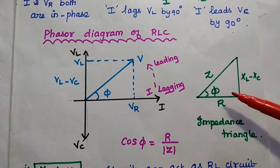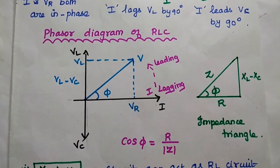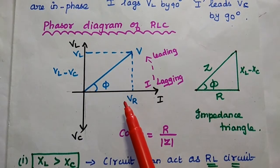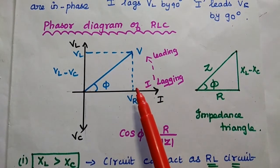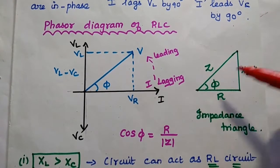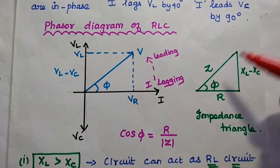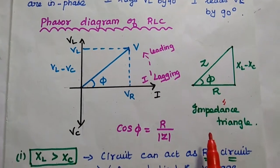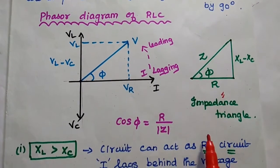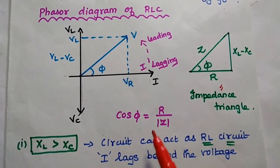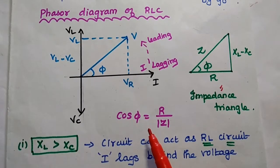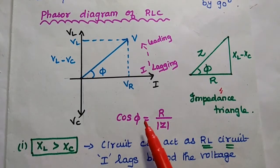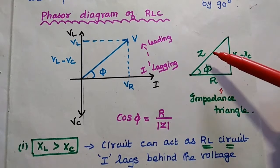We can take this triangle to obtain the impedance triangle. This side represents the resistance value R, this side represents XL − Xc, and the diagonal represents the final impedance value Z. With reference to this phasor diagram, we get the impedance triangle to find the phase value. Cos φ is the power factor, which is required to measure the performance of this series circuit, and cos φ = R / |Z|.